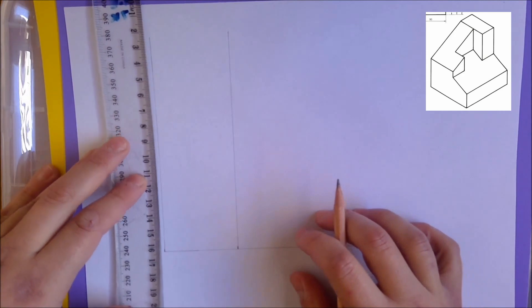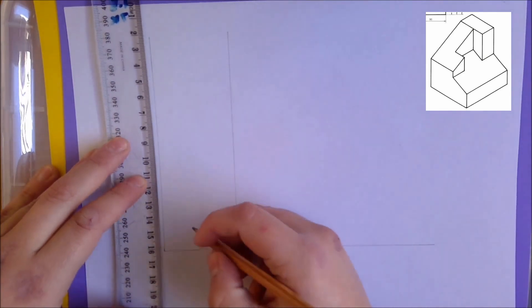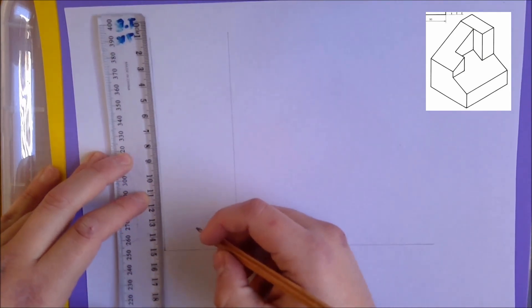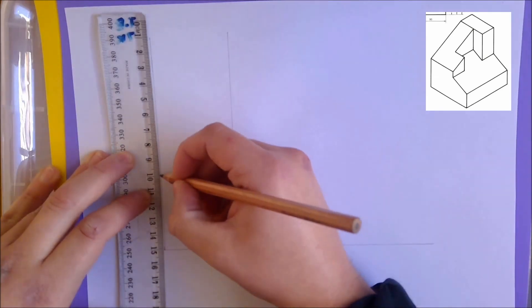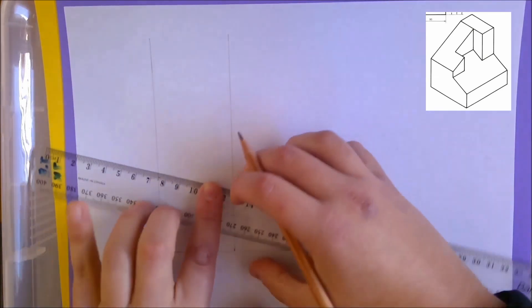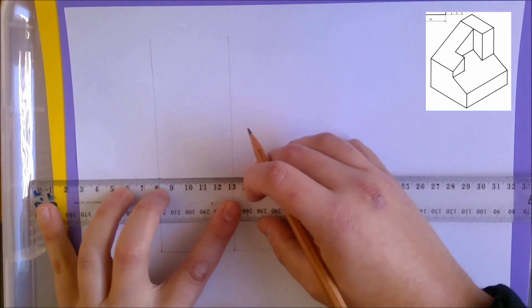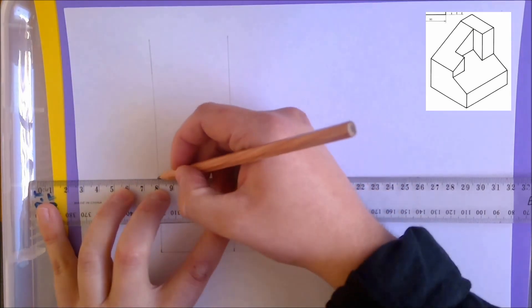So like I said, I'm going to make sure that my front view is five centimeters wide and five centimeters high. So using my ruler I'm going to measure five centimeters like so, and then I'm going to directly connect it across.